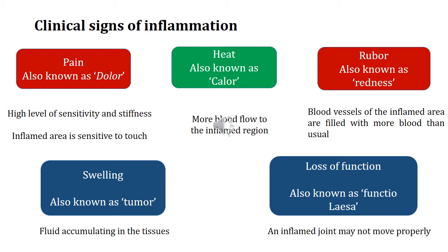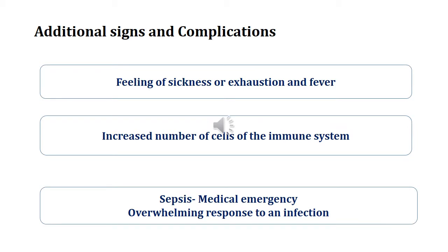These five things are the clinical signs of inflammation. In addition, you will also observe some additional signs such as sickness, exhaustion, and fever. There are also increased numbers of immune system cells, and the chances of sepsis are greater if the inflammation is of severe degree. Sepsis is an overwhelming response to an infection — it occurs when the immune system is unable to remove an infection locally, a large number of bacteria enter the bloodstream, and there is an over-stimulated immune response.